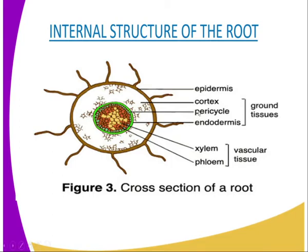The second tissue is the pericycle. The pericycle is a single layer of cells immediately inside the endodermis that gives rise to the lateral roots. We also have the endodermis — 'endo' means interior — so the endodermis is a single layer of cells surrounding the vascular bundle. It is characterized by possession of starch grains that turn blue-black with iodine solution, because when we test for the presence of starch, we use iodine and a positive result turns the color blue-black. The second characteristic of the endodermis is the Casparian strip, which has an impervious deposit on the radial and cross walls. The endodermis controls the amount of water and mineral salts entering the vascular bundles.